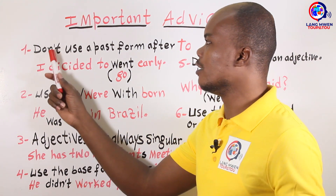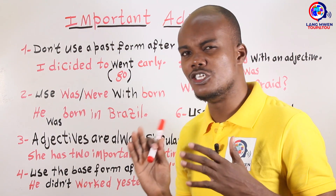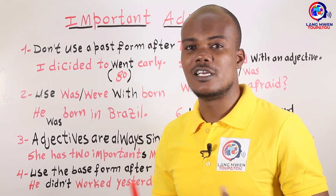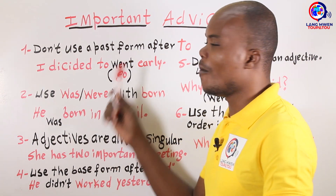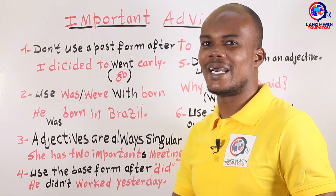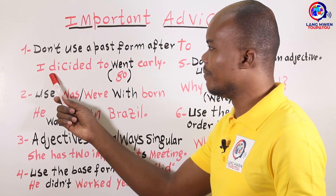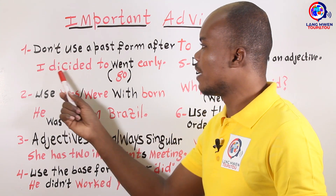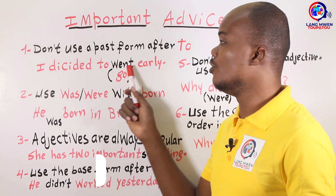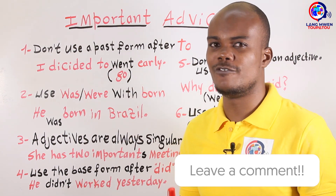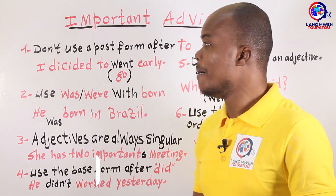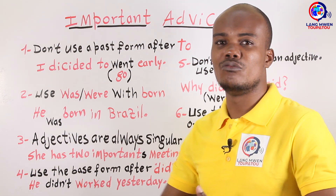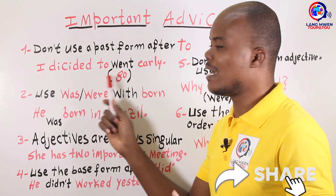Number one: don't use a past form after 'to.' You should know that — do not use a past form after 'to' in a sentence. For example, 'I decided' — 'decided' is the past form of the verb 'to decide.' Do not say 'I decided to' and then use the past form of the second verb.